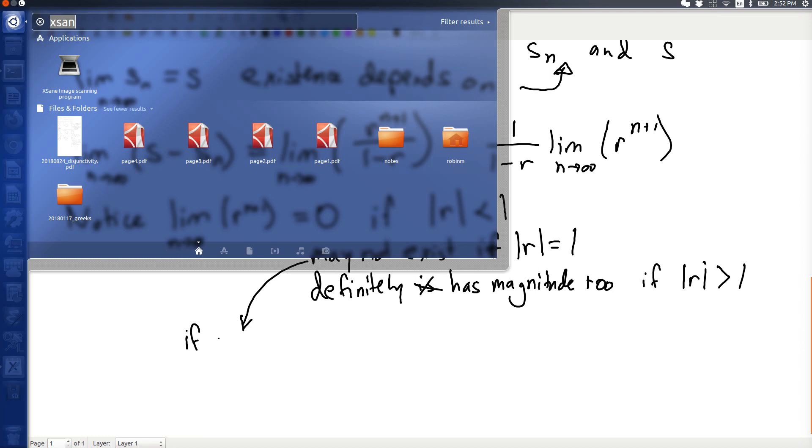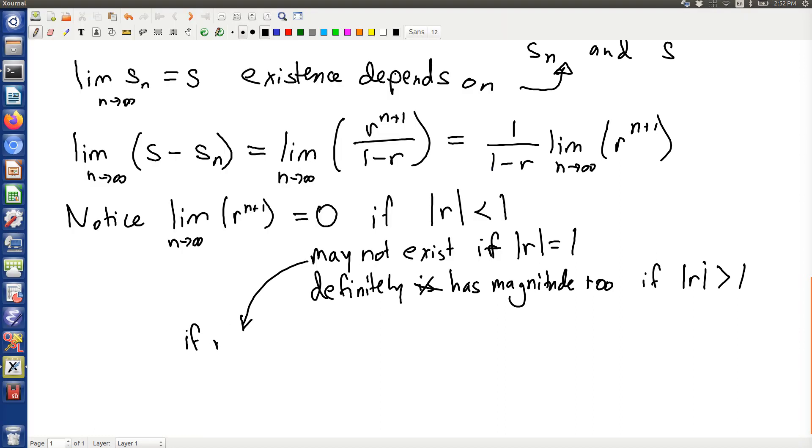So if r is equal to 1, but if r is equal to minus 1, this Sn is 1, minus 1, 1...